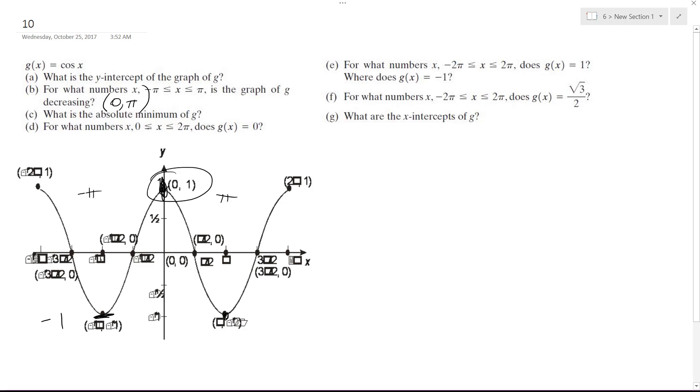For what numbers from zero to 2π does g(x) equal zero? Negative 3π/2, wait a second, negative π/2, π/2, and 3π/2.